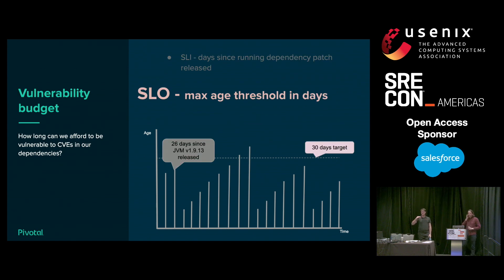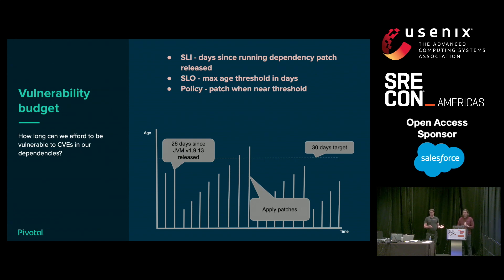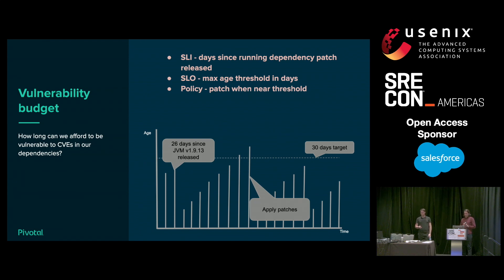Our SLO in this system might be some max age — a threshold in days — below which we think we're taking on too much risk if we're above it, but if we keep below it, we're secure enough. Arbitrarily, I've said 30 days. And then we'd want some kind of policy: when our measure — the age of our patch — gets close to our threshold, we take action. That action may be to apply security patches. Same model as availability, but with different calculations: SLI is days since the dependency patch was released, SLO is the maximum age we're comfortable with, and policy is to do security patching when we approach that maximum age.